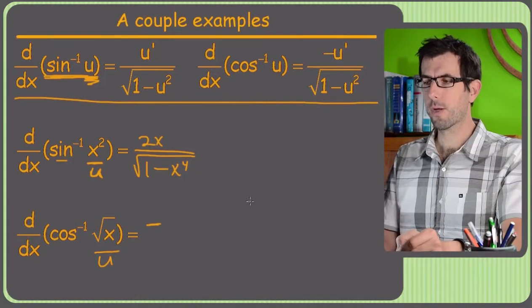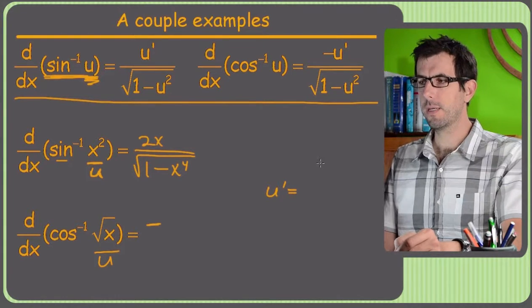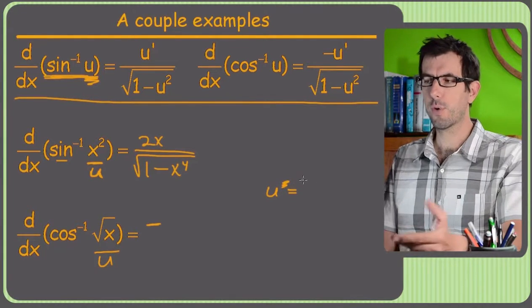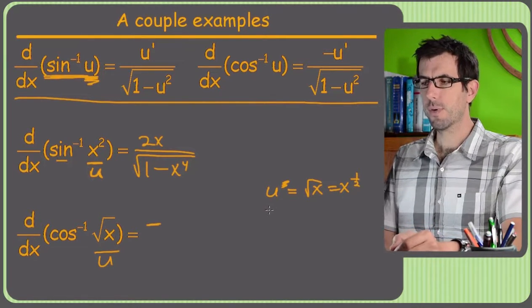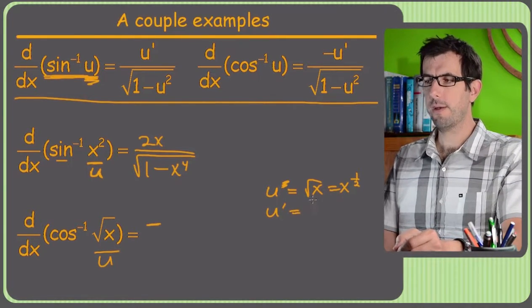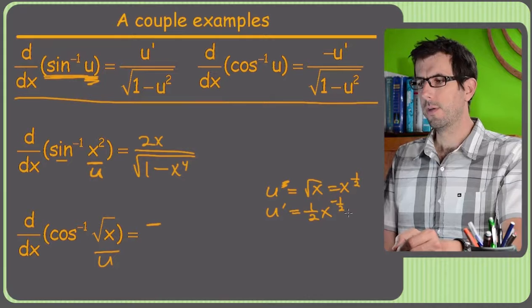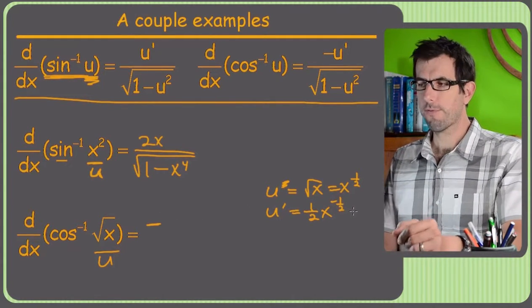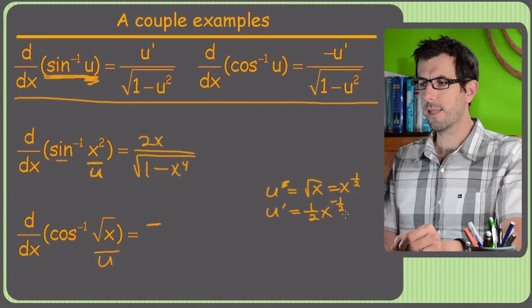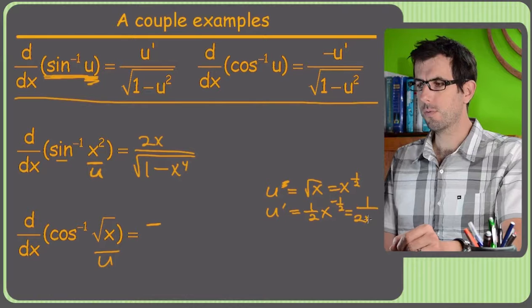U prime in this one is going to be, well, first of all, our U is just square root of x, which is x to the one half. So as you've probably seen by now, derivative of x to the one half is a little bit nasty. It's one half x to the minus one half, which you can just leave like that if you want. Then again, it's going to work on fractions anyway. Let's rewrite that as 1 over 2 root x.